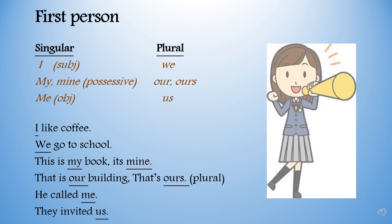Personal pronouns used with first person: first person singular subject is I, plural is we. First person singular possessive pronouns are my and mine, plural are our and ours. First person singular object is me, and its plural form is us.